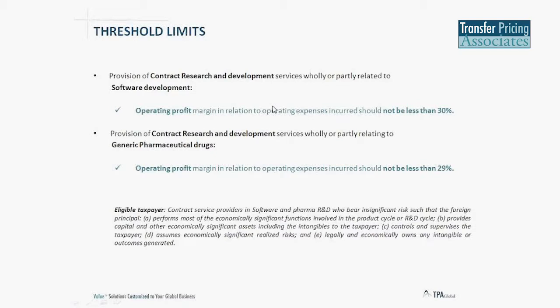For contract research and development services related to software development, the operating profit margin must be not less than 30%. For generic drugs contract R&D, it is not less than 29%. Again, eligible taxpayers must be entities bearing insignificant risk performing most economically significant functions. The bottom line for all categories is that you must qualify as an insignificant risk entity — the moment you don't, you are out of safe harbor. Most companies that face additions generally get relief at higher appellate authorities.